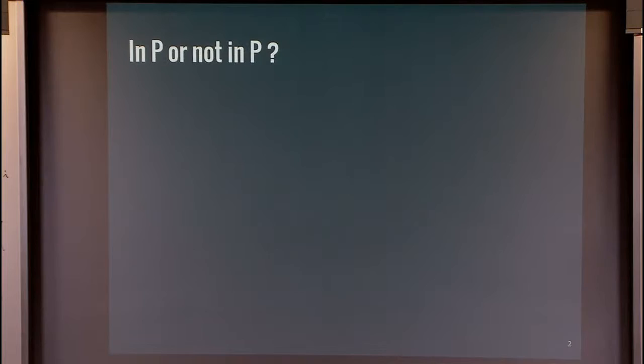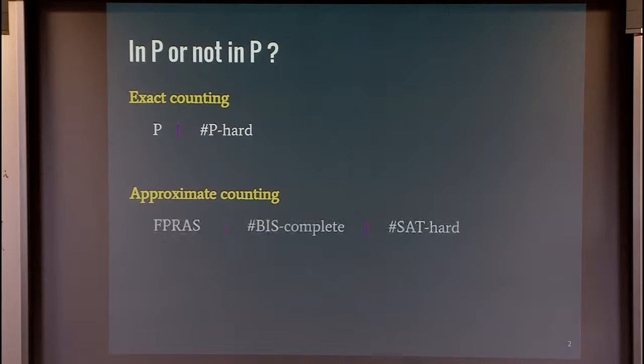Usually when we look at complexity in counting, we have wondered whether it's in P or not in P. In exact counting, the dichotomy is between P versus Sharp-P. And in approximate counting, maybe we have a trichotomy situation where it either has an approximation scheme, or it's BIS-complete, or it's as hard to approximate as that. But really it comes down to: can it be approximated in polynomial time or not, under reasonable complexity assumptions such as P equals NP or not equal to NP.